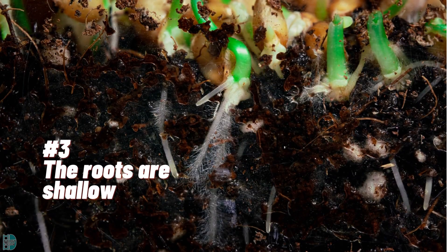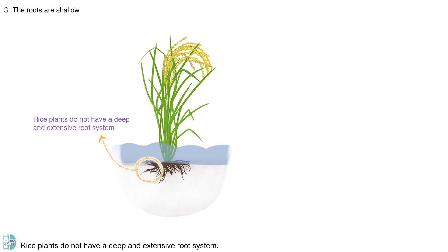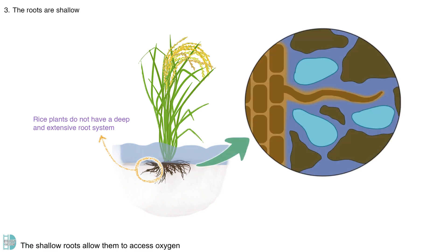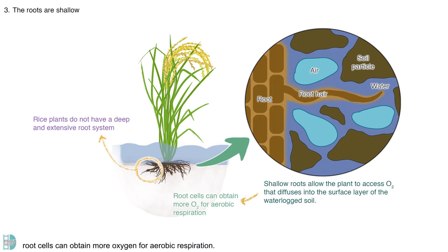Adaptation 3: The roots are shallow. Rice plants do not have a deep and extensive root system. The shallow roots allow them to access oxygen that diffuses into the surface layer of the waterlogged soil. With these features, root cells can obtain more oxygen for aerobic respiration.